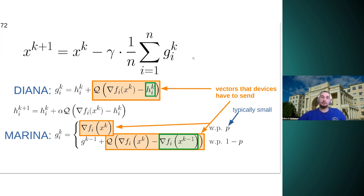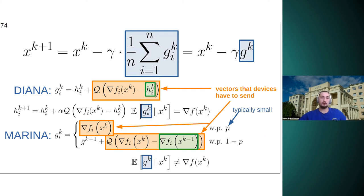And another difference between Marina and DIANA is that in DIANA, GK is an unbiased estimate of the true gradient. While in Marina, GK is no longer conditionally unbiased estimate of the true gradient. And it slightly complicates the analysis of the method. And in our work, we proved the following convergence result, complexity result. So it's optimal dependence on epsilon and better dependence on omega.